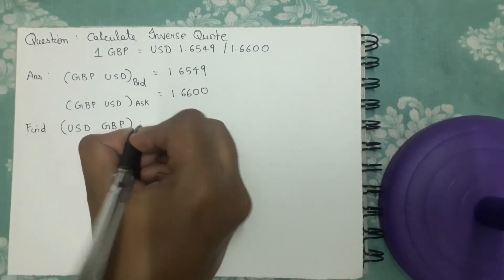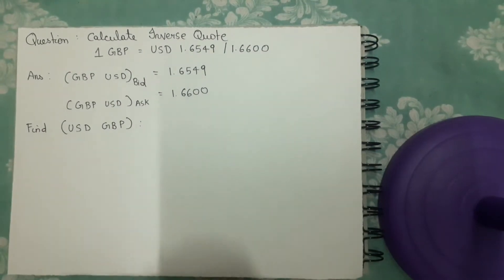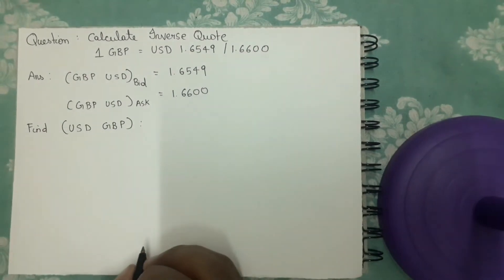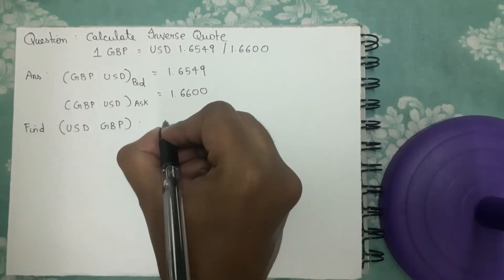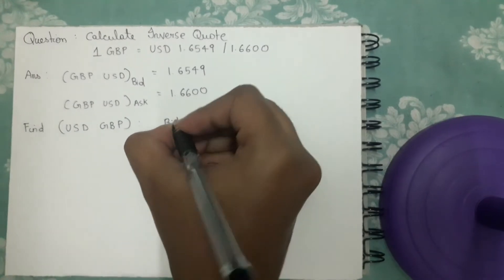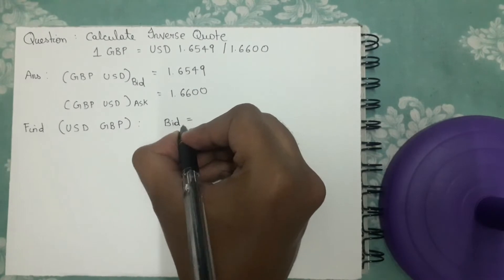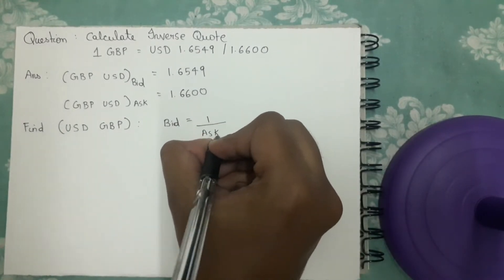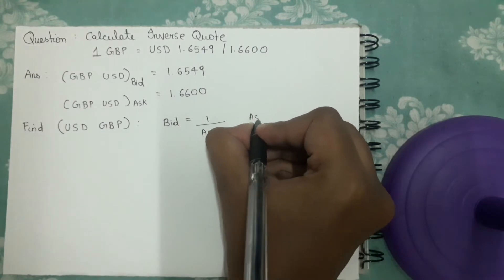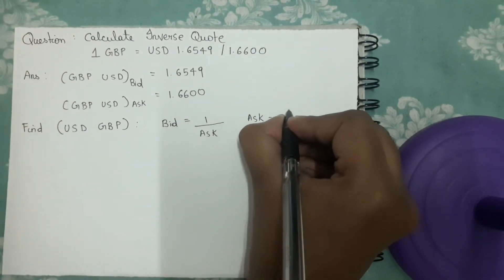There is a formula to find the bid rate and ask rate. To find bid rate, the formula is: bid rate equals 1 by ask rate, and ask rate equals 1 by bid rate.